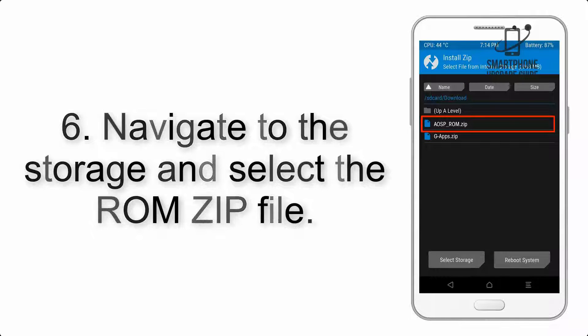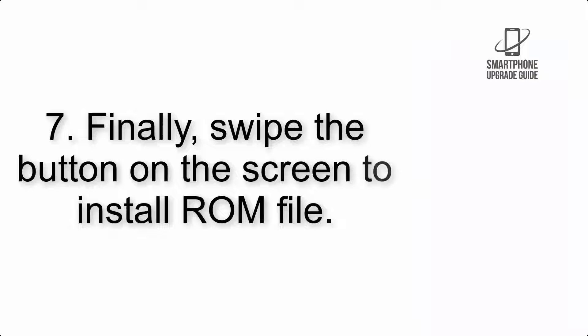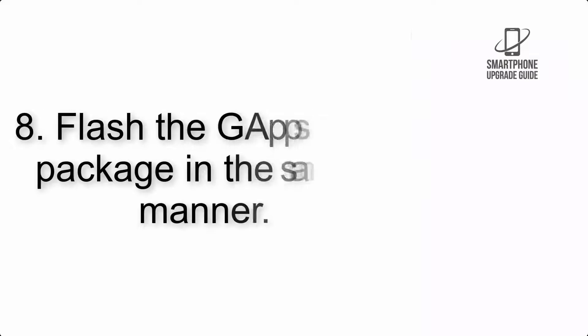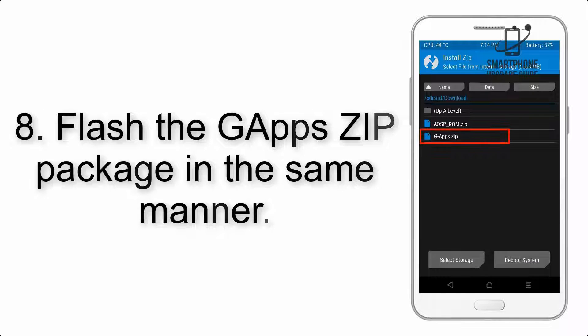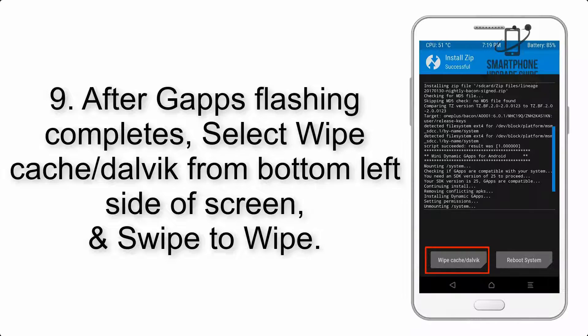Step 5: Go back to the recovery main screen and tap on the install button. Step 6: Navigate to the storage and select the ROM zip file. Step 7: Finally, swipe the button on the screen to install the ROM file.